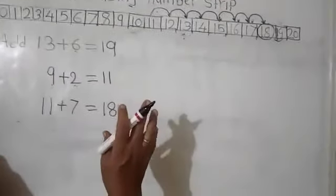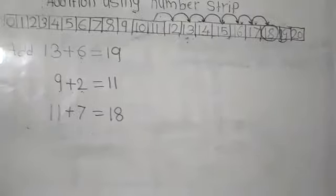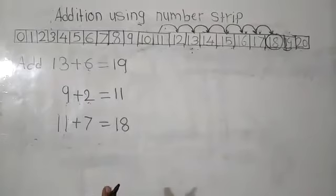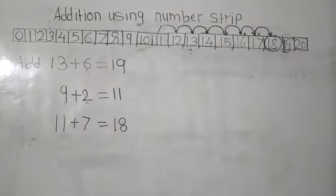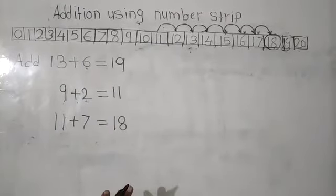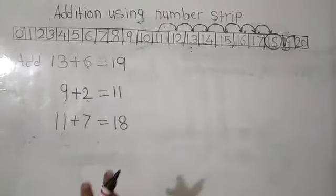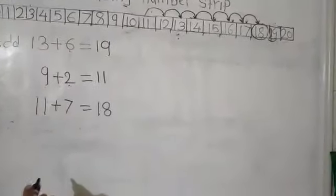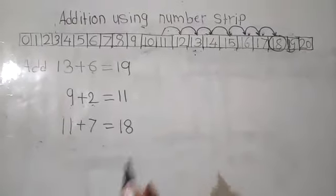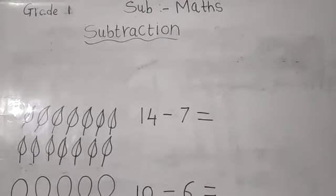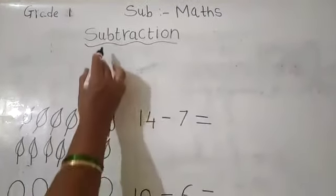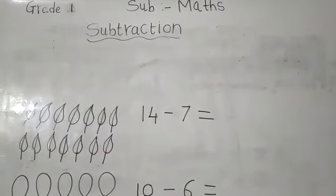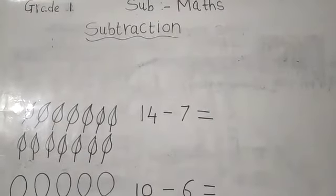I hope you have understood how to do addition using the number strip. Now you have to complete page number 86 to do addition using the number strip. Now we will see subtraction. Subtraction means crossing out. Let me show you how to cross out.